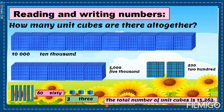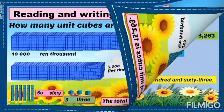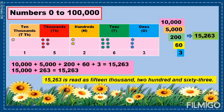And again, the total number of unit cubes is 15,263. This slide now shows numbers from 0 to 100,000. We have here a place value chart. We have ones, tens, hundreds, thousands, and ten thousands.